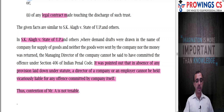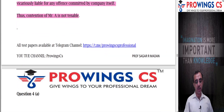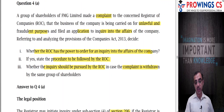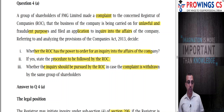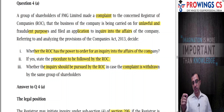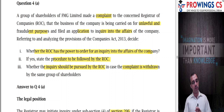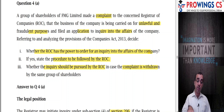Next question: A group of shareholders of FMG Limited made a complaint to the ROC that the business of the company is being carried out in an unlawful and fraudulent manner and filed an application to inquire into the affairs. Three things are asked: whether the ROC has power to order an inquiry, the procedure to be followed, and what happens to the inquiry if the complaint is withdrawn by the same group.